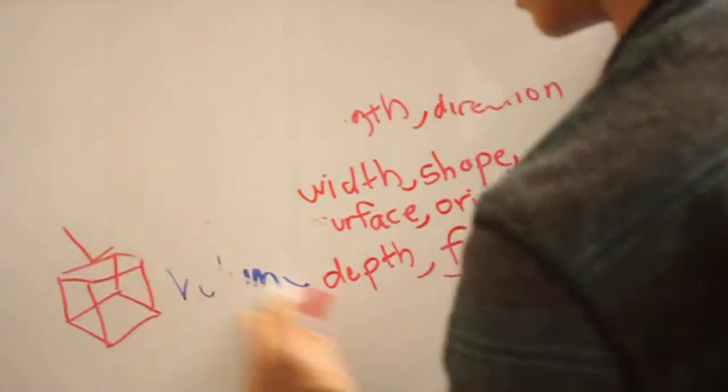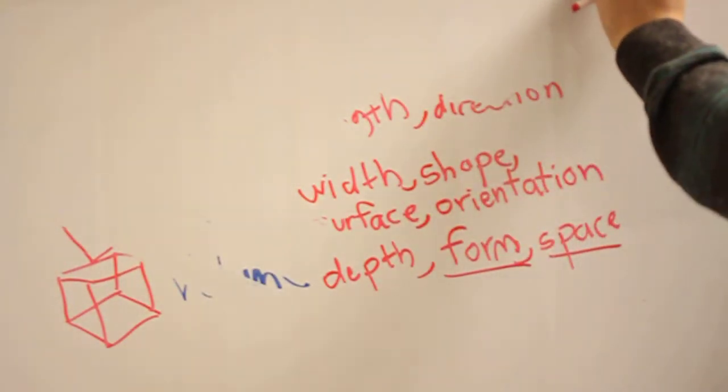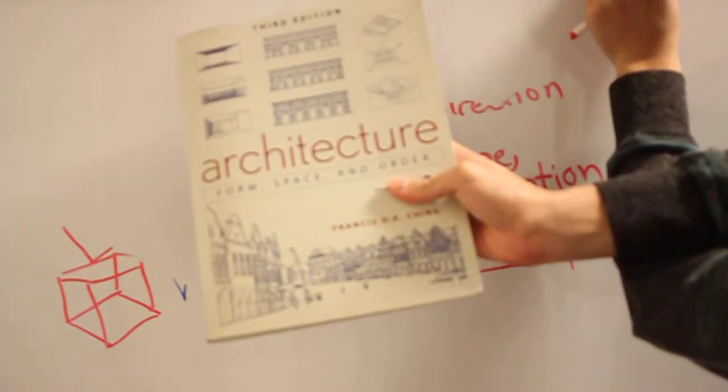The book is titled Architecture, Form, Space, and Order.